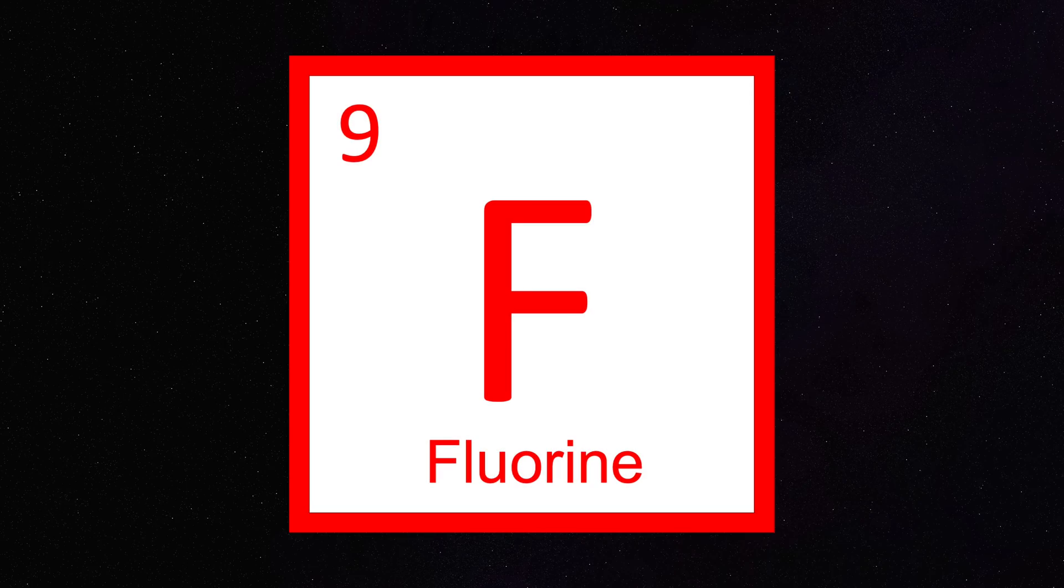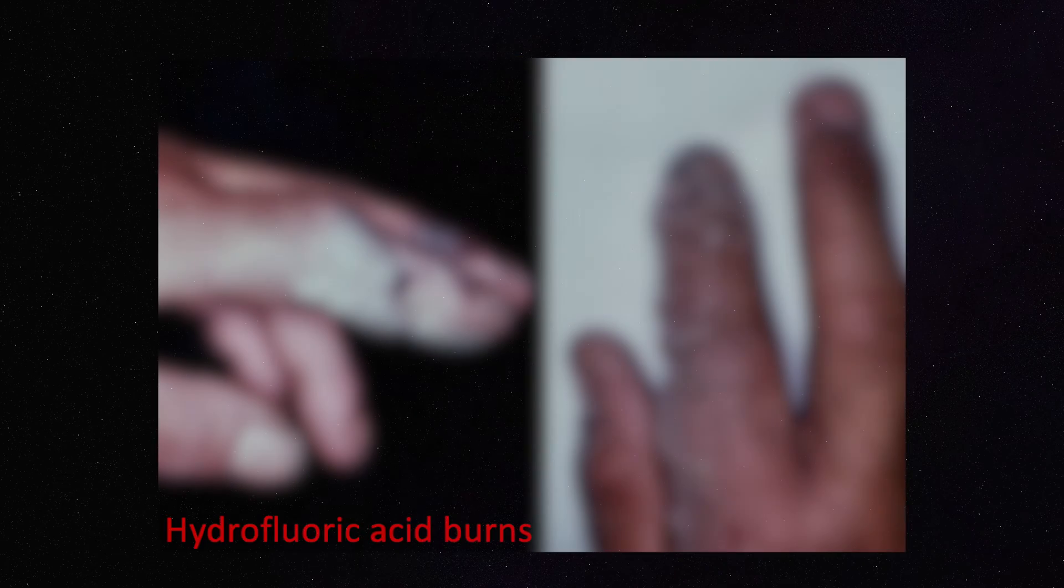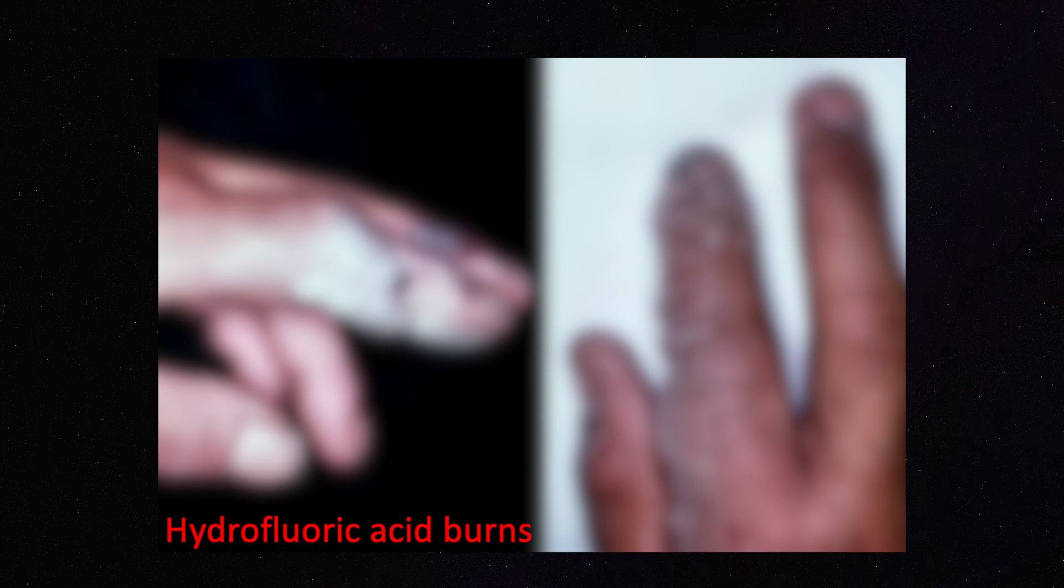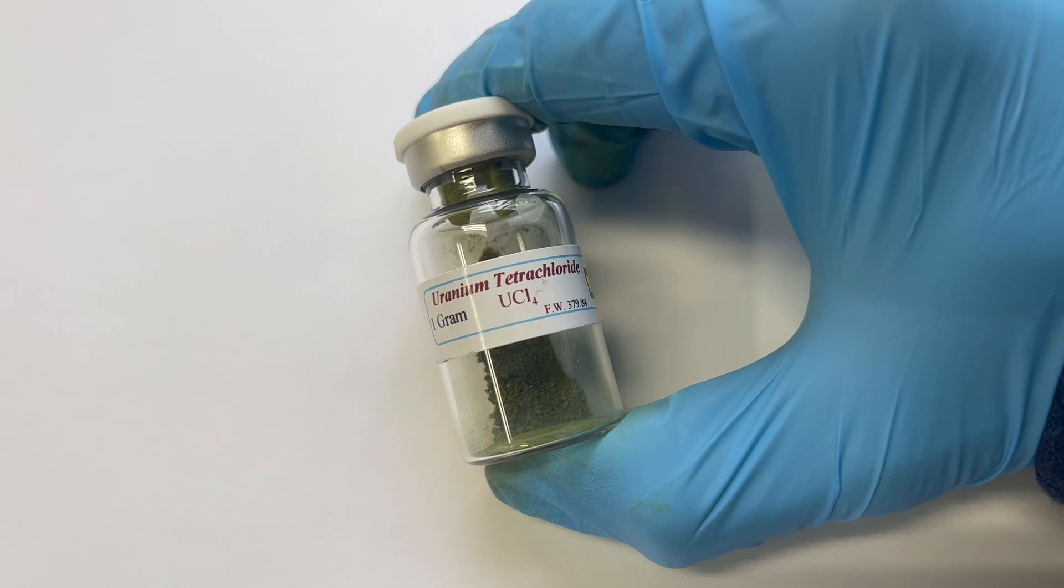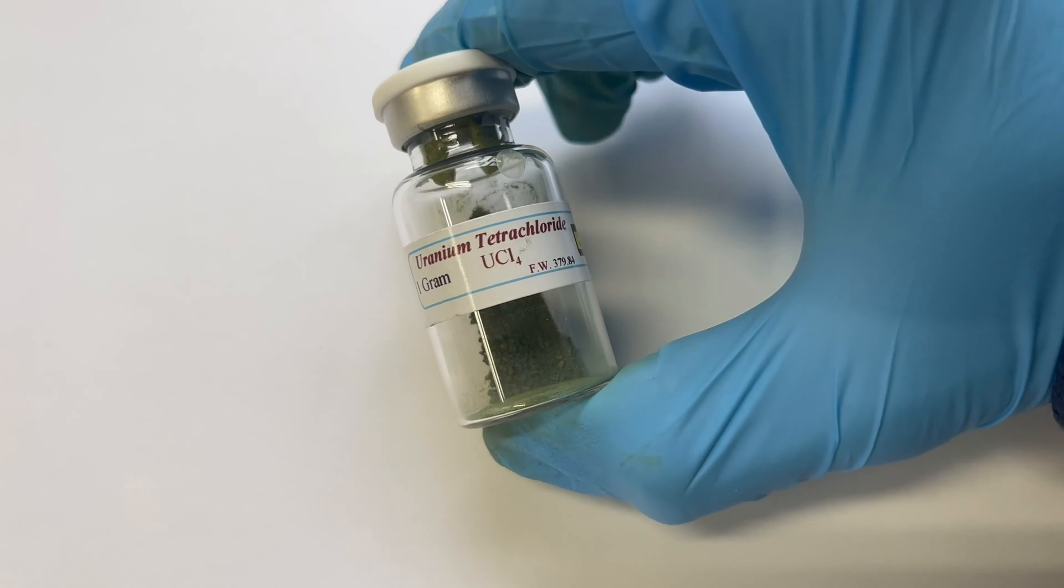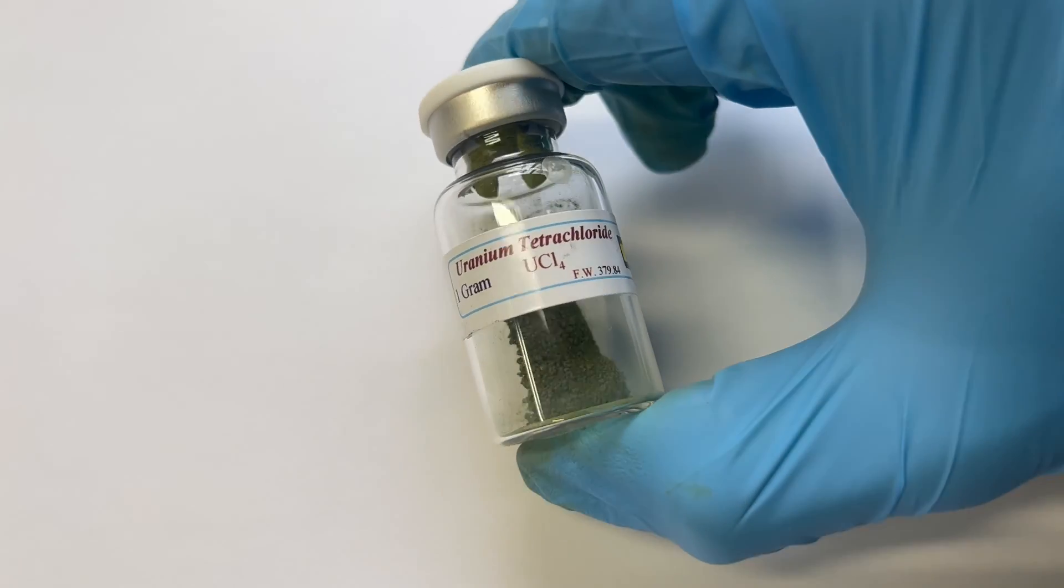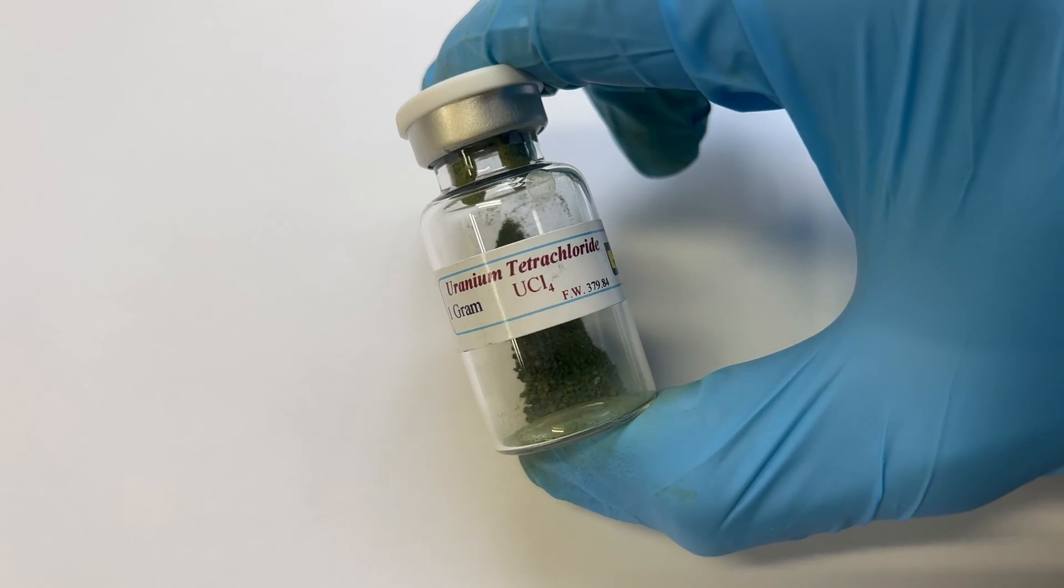Most of the time that's fluorine, but fluorine is quite annoying to work with. Another great option is chlorine, which is where uranium tetrachloride steps in. It's a gorgeous green solid that serves many uses, such as the reduction to uranium metal.